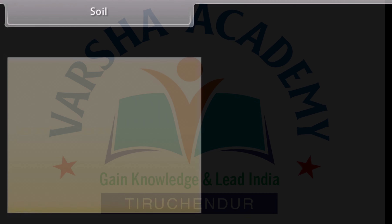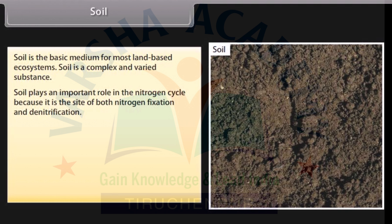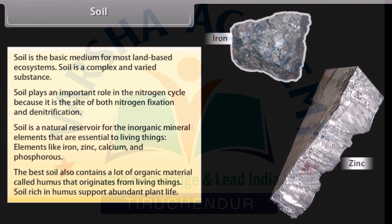Soil is the basic medium for most land-based ecosystems. It is a complex and varied substance that plays an important role in the nitrogen cycle because it is the site of both nitrogen fixation and denitrification. Soil is a natural reservoir for inorganic mineral elements essential to living things, such as iron, zinc, calcium and phosphorus. The best soil also contains a lot of organic material called humus that originates from living things, and soil rich in humus supports abundant plant life.